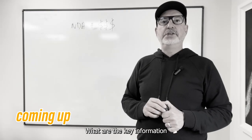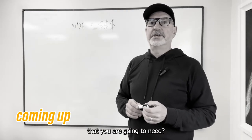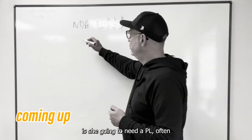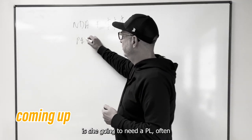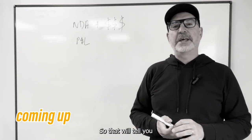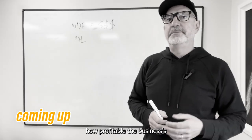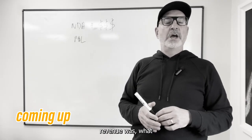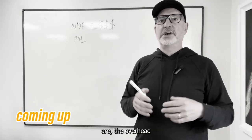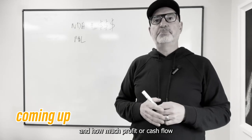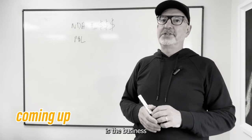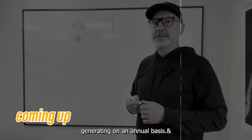What are the key information requirements that you are going to need? So the first thing that you're going to need is a P&L, often called an income statement. That will tell you how profitable the business is, what the revenue was, what the costs and expenses are, the overhead, and how much profit or cash flow the business is generating on an annual basis.